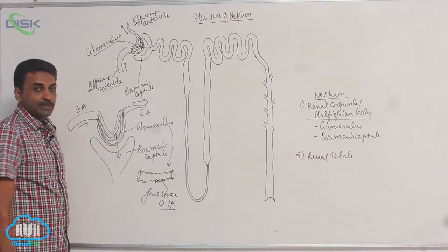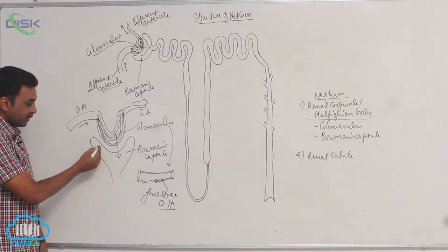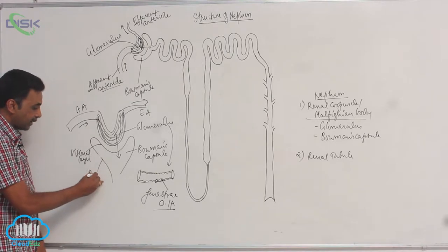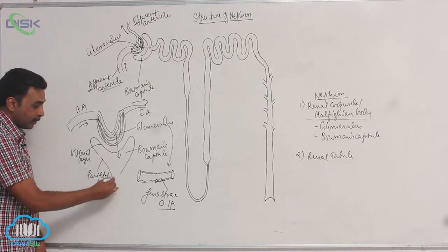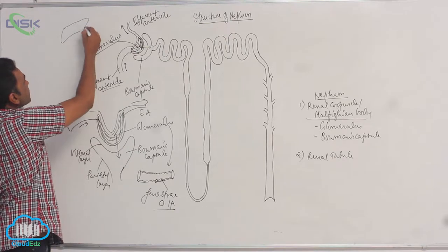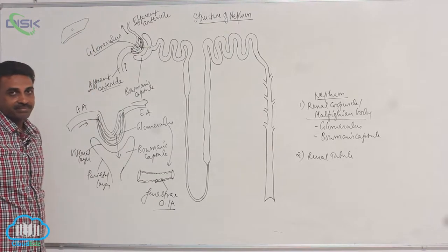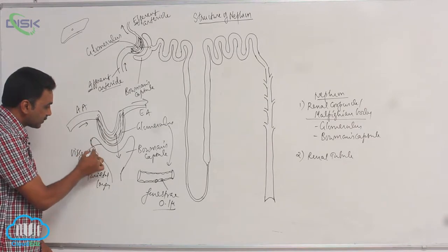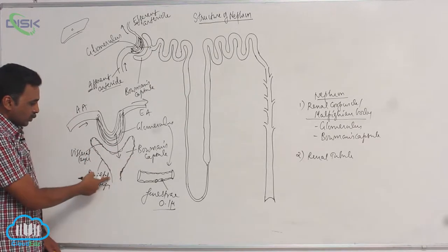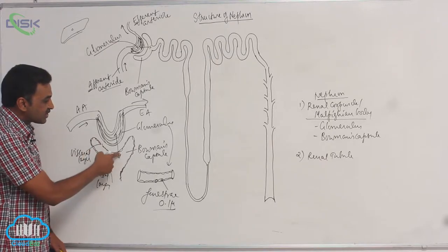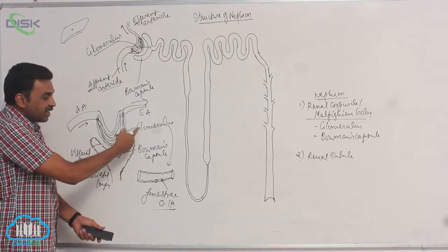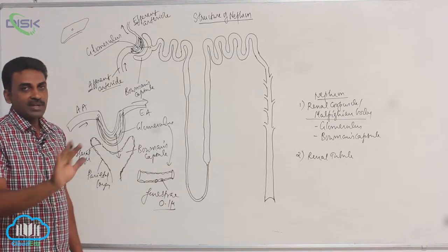Bowman's capsule is made up of two layers: the visceral layer and the parietal layer. Both are made up of simple squamous epithelium — a single layer of flat cells. It is actually a single layer that after invagination appears as two layers, but it is simple epithelium only.